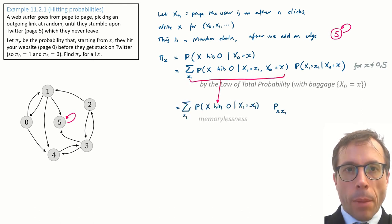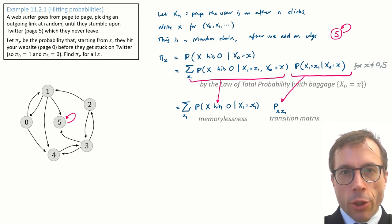Next step: memorylessness. That's why I did the conditioning in the previous step. I know I can use the memoryless property if only I have x1 in the condition. It wasn't there originally, so I had to bring it in using the law of total probability. Now that we do have x1 in the condition, we can ignore x0 by memorylessness. I've also bunked in the transition matrix entry here, p sub xx1.